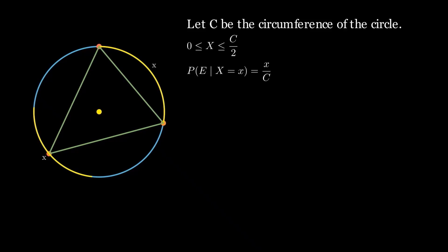This is because the favorable arc for the third point has a length X while it can be placed anywhere along the total circumference C. Now let's calculate the probability density function of X.